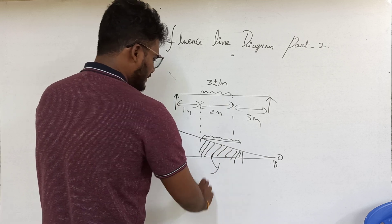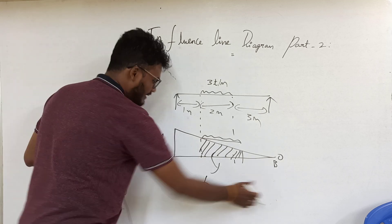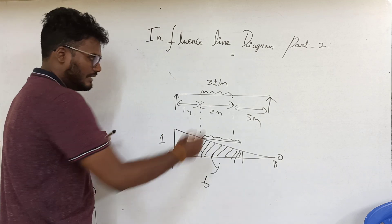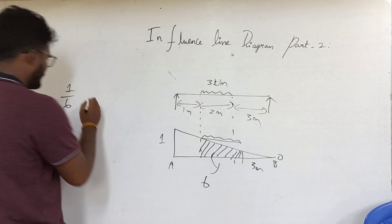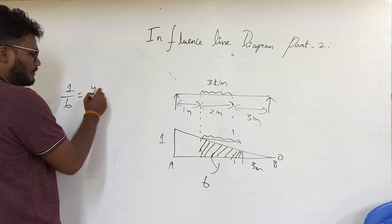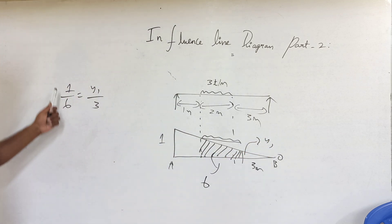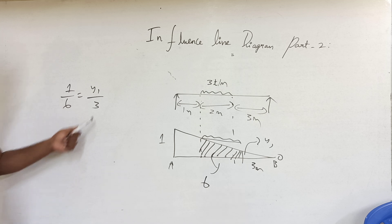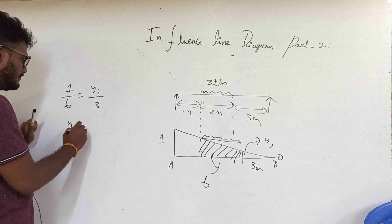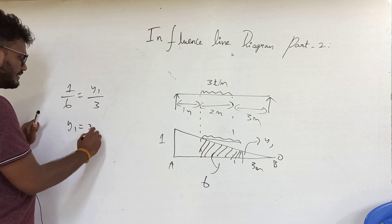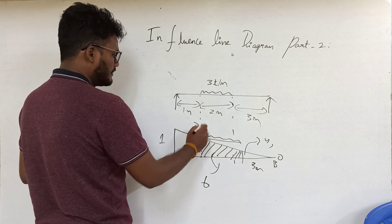For 6 meters the vertical ordinate is 1. For 3 meters, what is the vertical ordinate? Let this be Y1. For 6 meters ordinate is 1, so for 3 meters, Y1 is equal to 3 by 6, which is 1 by 2.